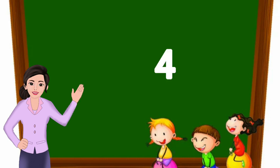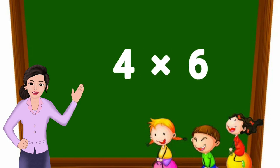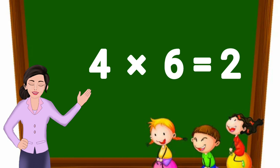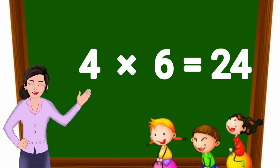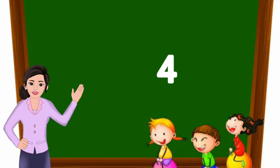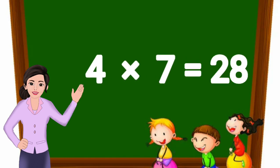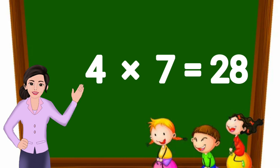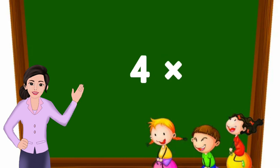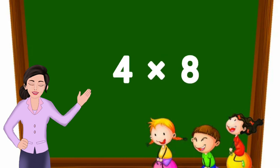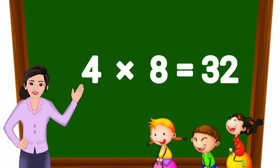4 sixes are 24. 4 sevens are 28. 4 eights are 32.